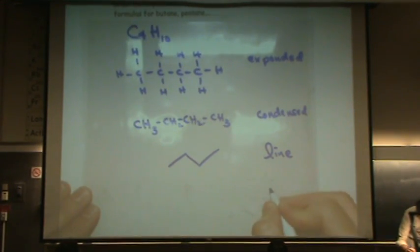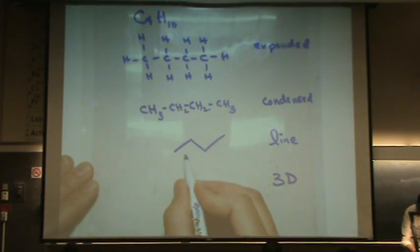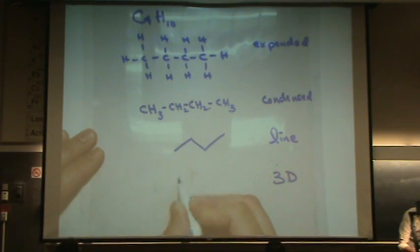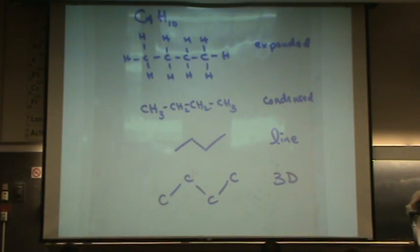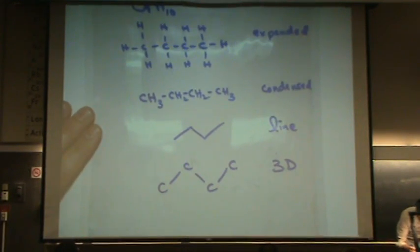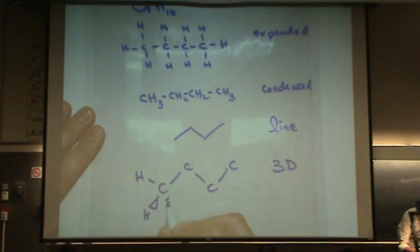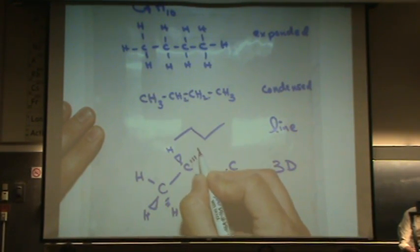And then the 3D, basically what I would do is follow the line template and then add the 3D part. I'm going to zig and zag like the line. And then I'm going to add my 3D, my tetrahedral template. Remember, two are in the plane, or lines, and one's a wedge and one's a dash.